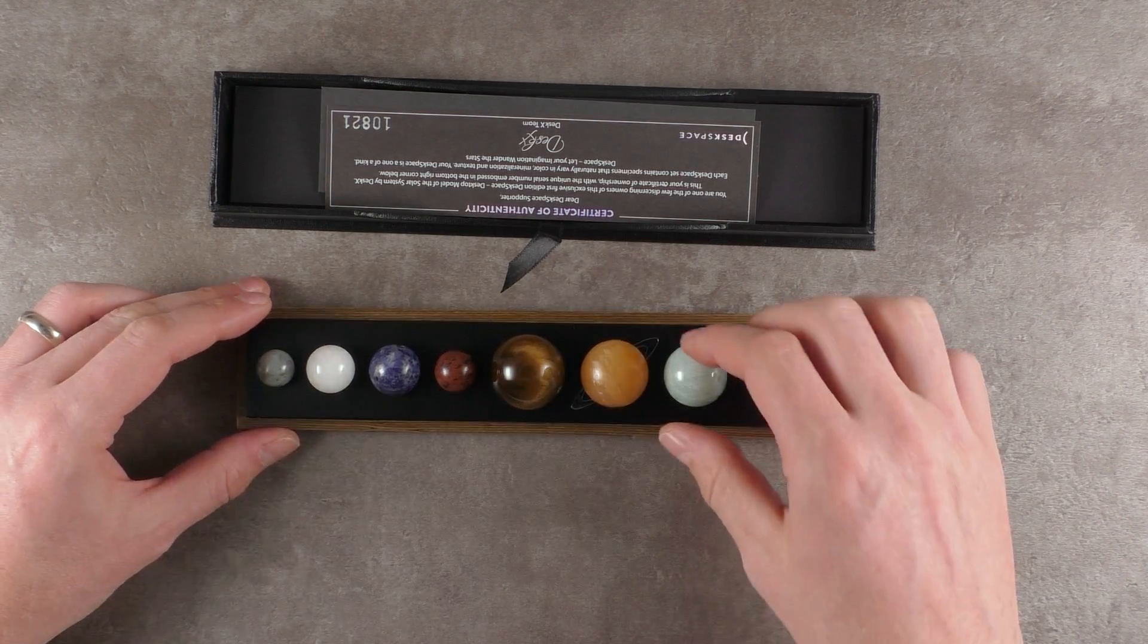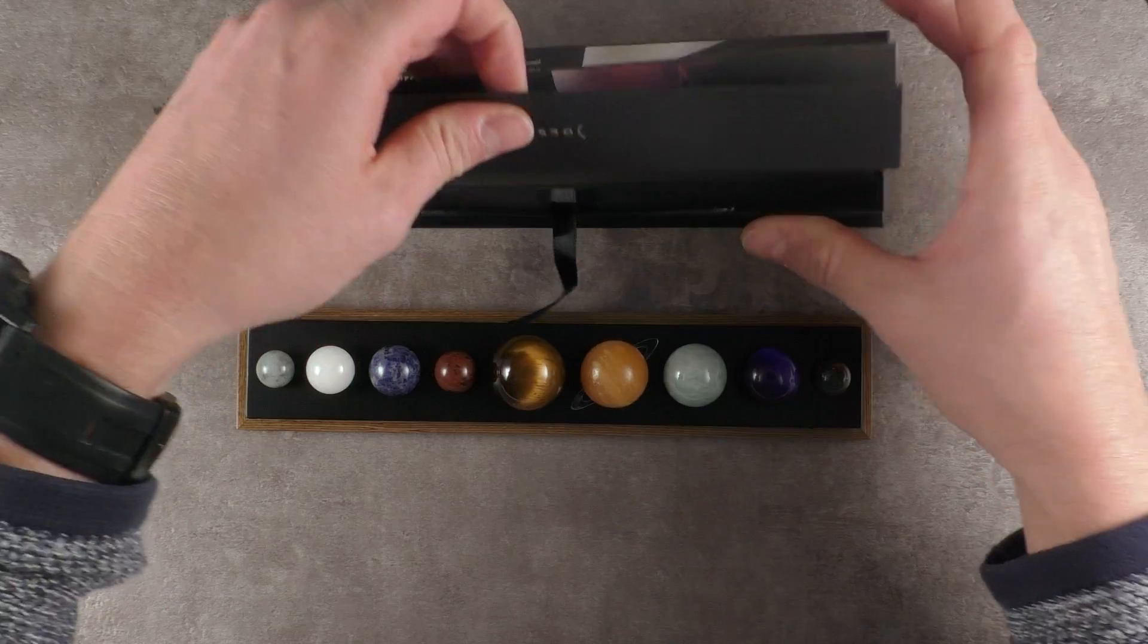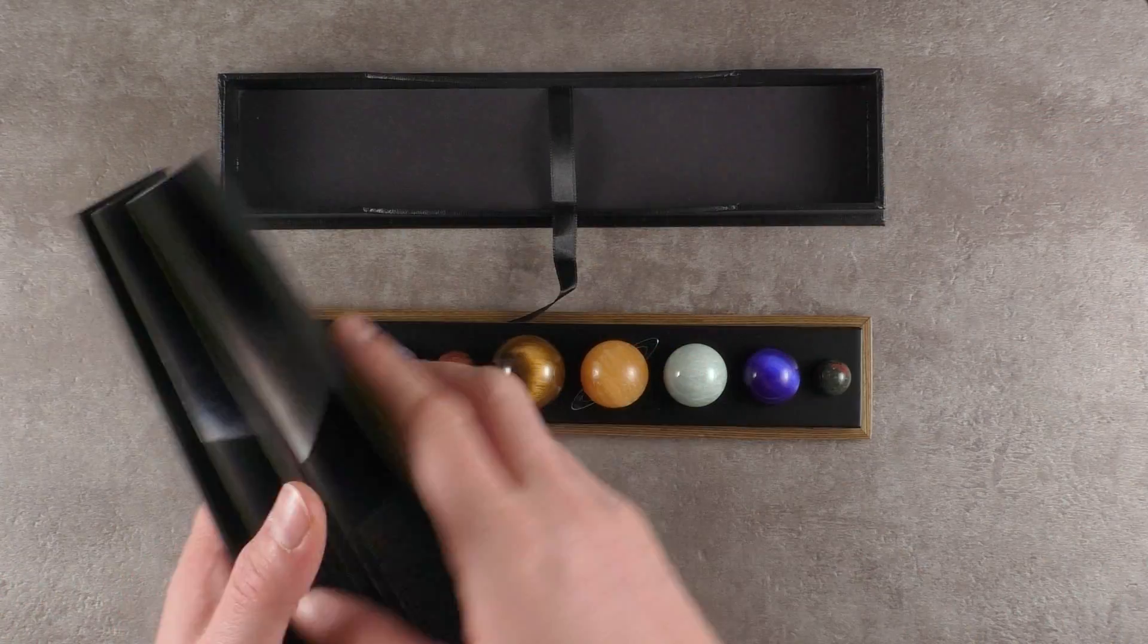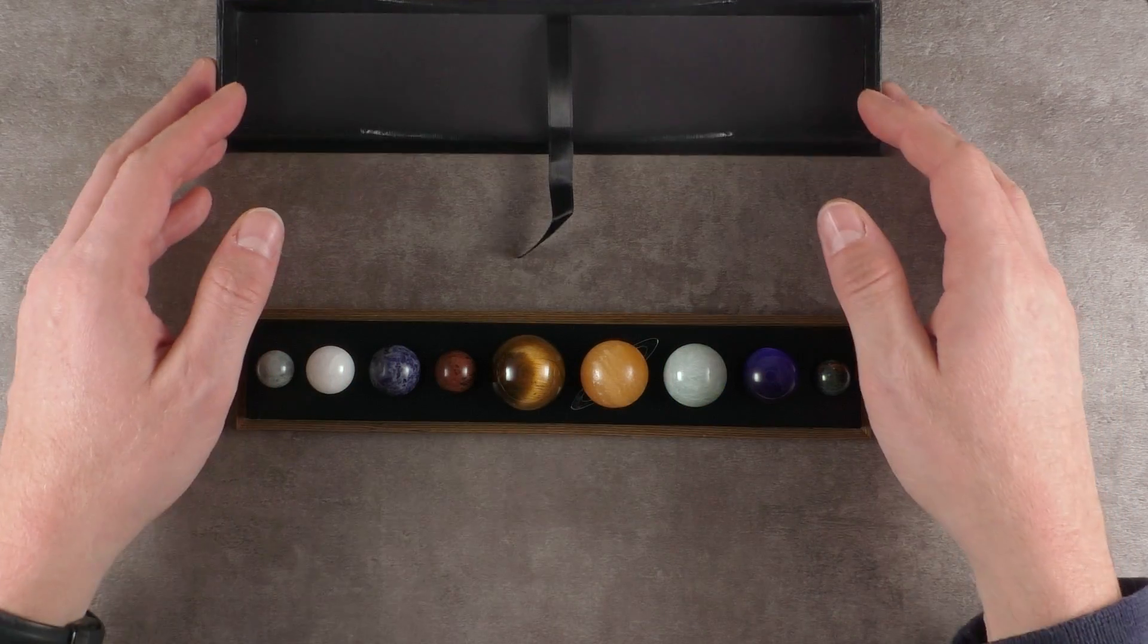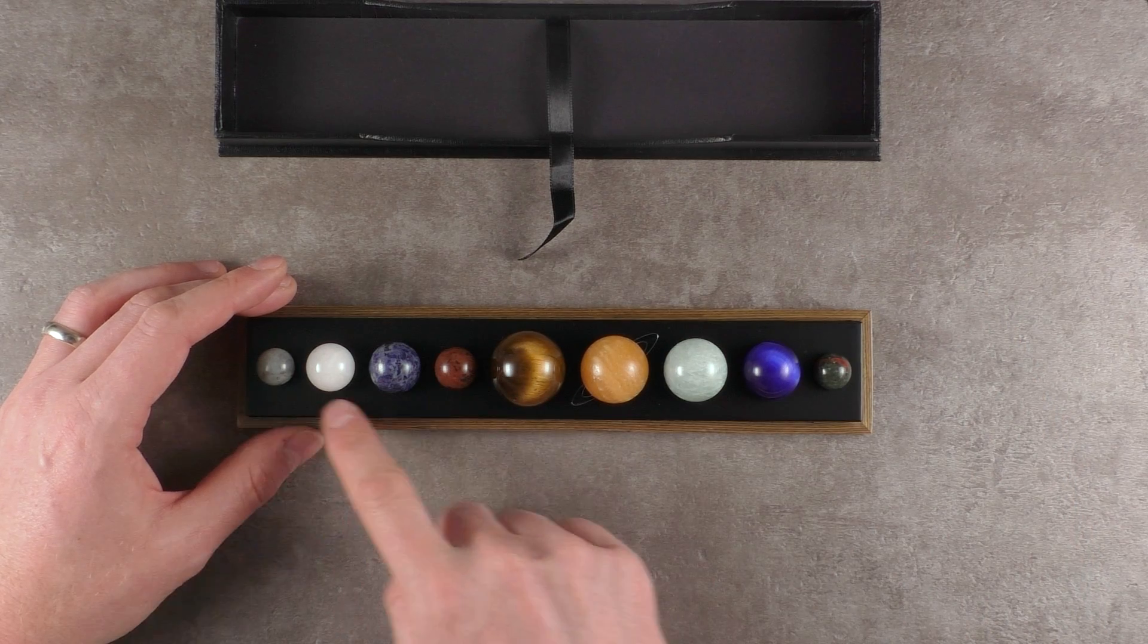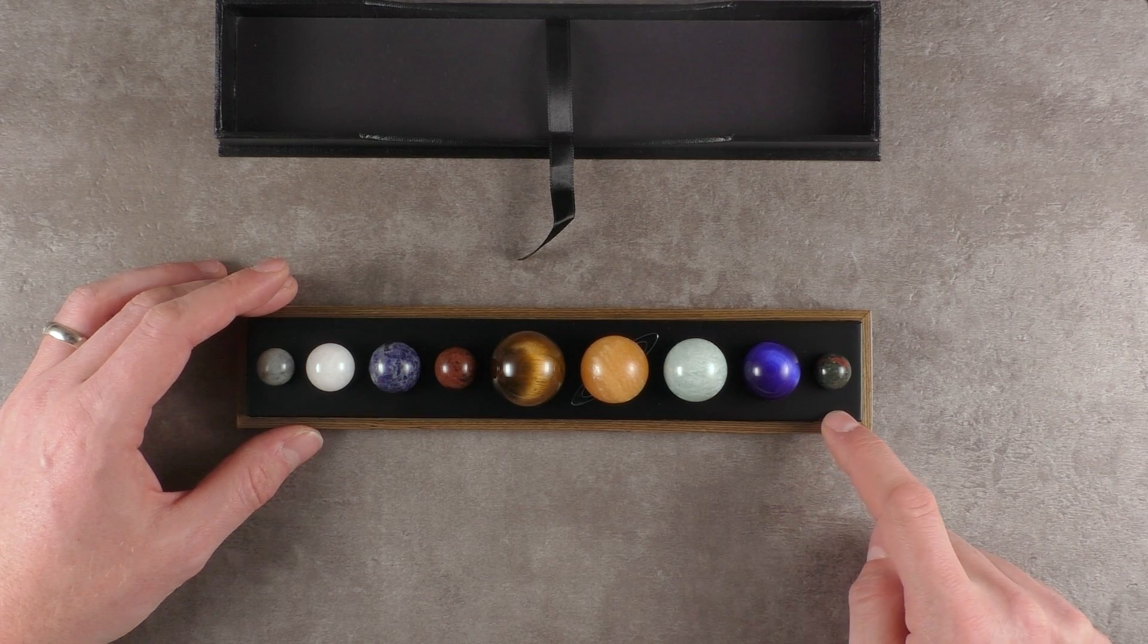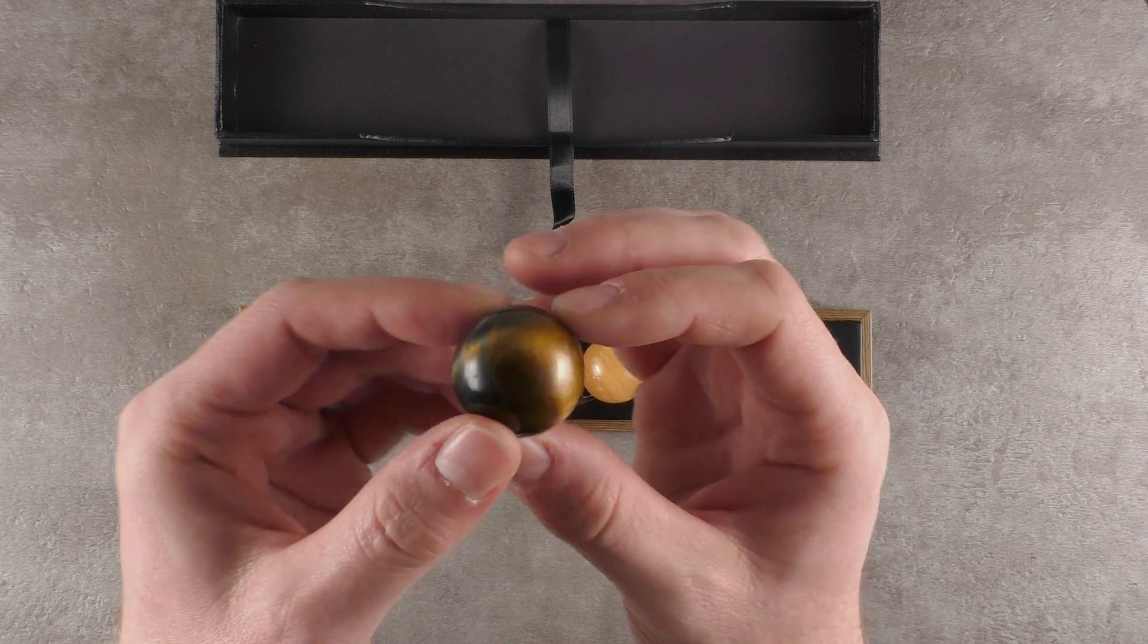Each of these gemstones, spheres obviously, represents a planet. And over here also, with some information about the planets each of these stones representing. There are also detailed information about the stones, each single type of stone on the website. Unfortunately, there is no flyer or anything inside here that's explaining what kind of stone or what type of stone each one is.